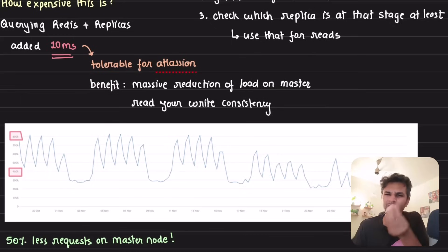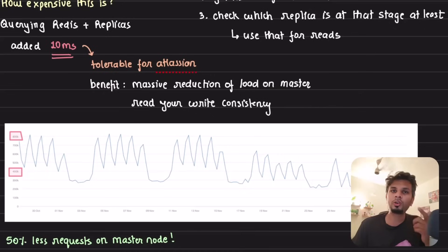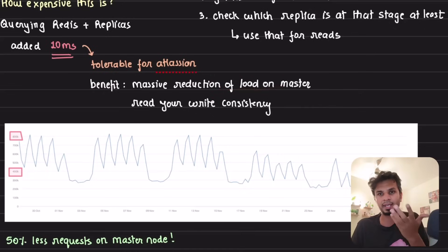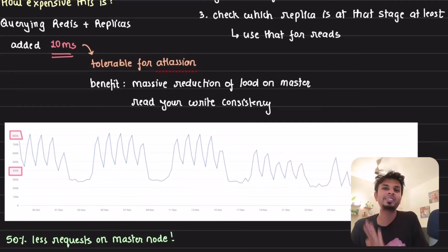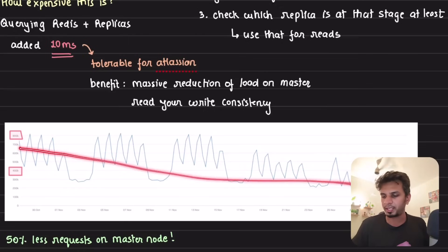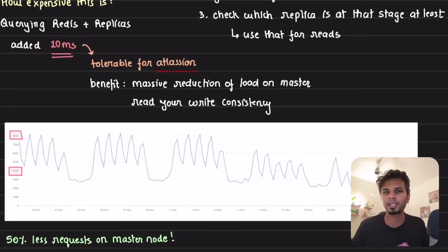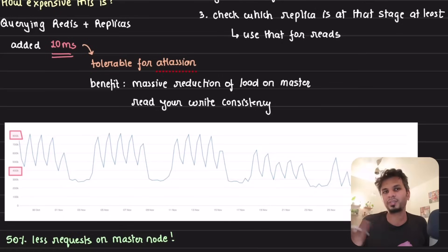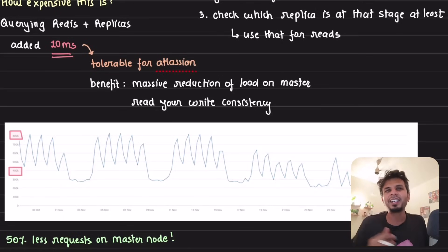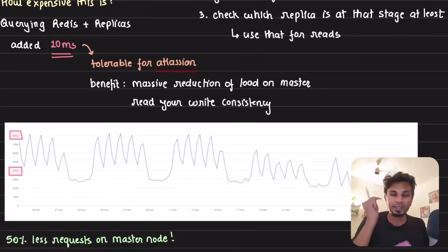The benefit they got was a massive reduction of load on master, because now all reads go to replica — only writes and reads that cannot go to replica hit master. The load on master reduced by a massive margin. The number of requests going to the primary node reduced by 50 percent, meaning master becomes less loaded, more performant, and they could even scale it down if they wanted to.